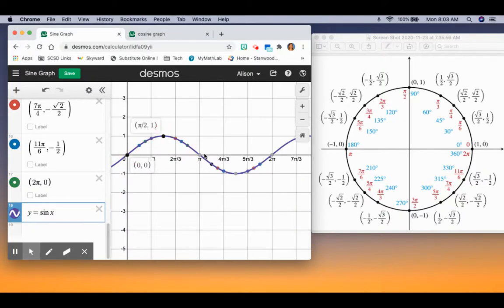So same thing on sine here, here, here, here, and here. These five points will help shape our graph. This hopefully gives you an idea of where the sine and cosine graphs come from, and how they're connected to those key points on the unit circle.